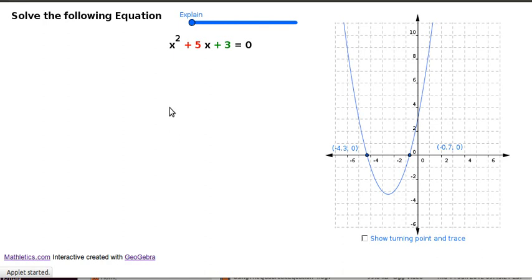Just a short clip to go through using the quadratic formula to solve a quadratic equation. So here's a quadratic equation: x squared plus 5x plus 3 is equal to 0. And we're after the values of x that make this mathematical sentence true.